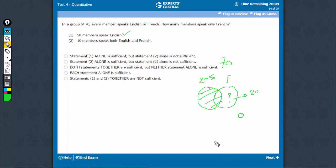10 members speak both English and French. Let's try this one. All is 70. This is 0. This is English. This is French. This talks about this part being 10. So there are two variables. We cannot find this. This cannot be determined. Statement 2 is not sufficient.